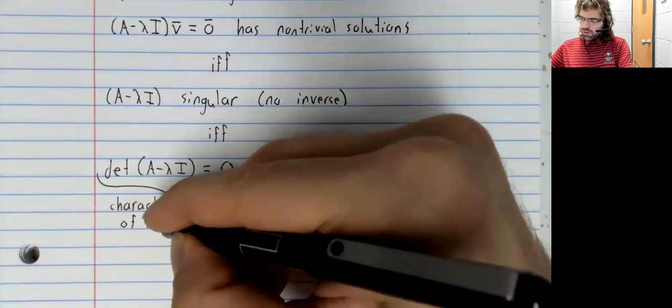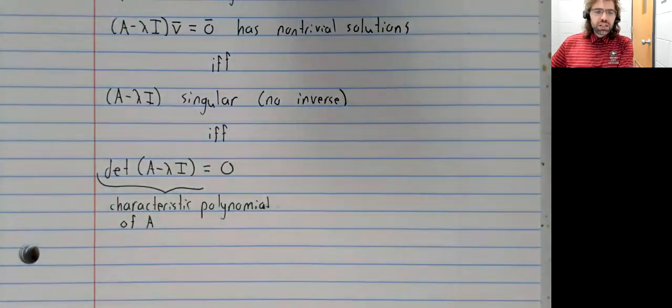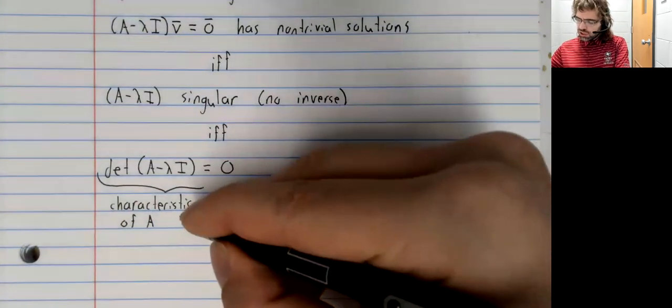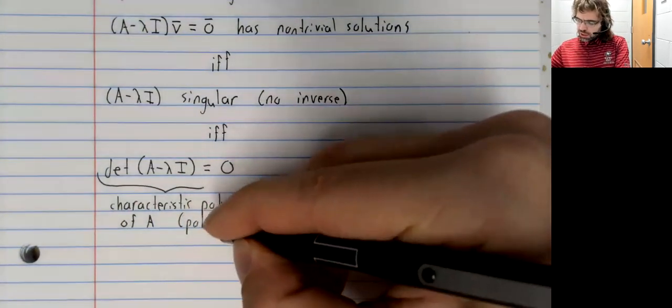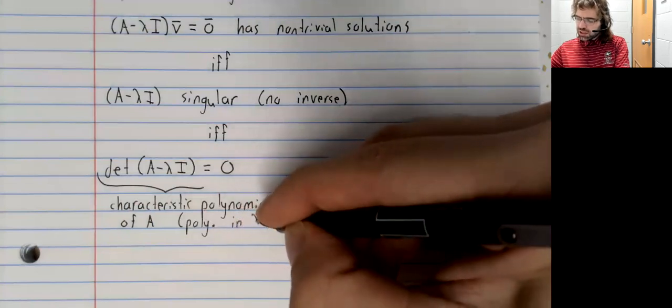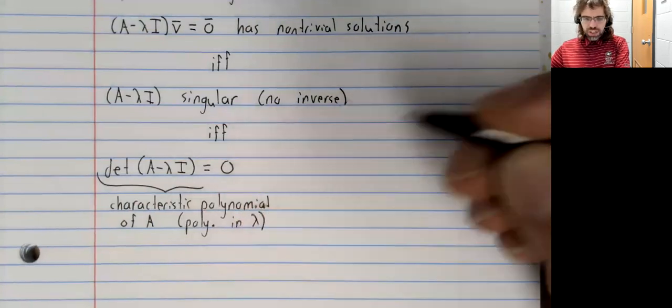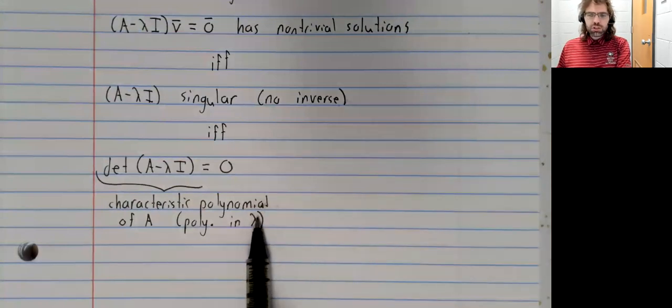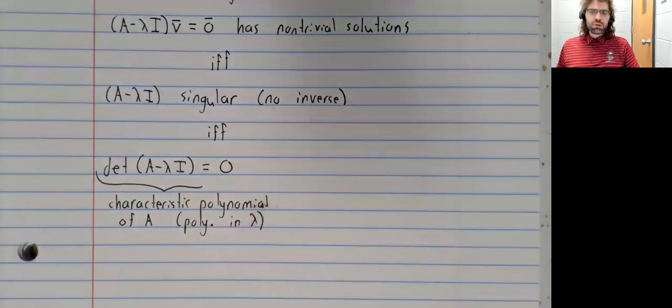of A. I think I misspoke just now - this is a polynomial in lambda, that is to say it's going to be lambdas raised to powers and combined linearly